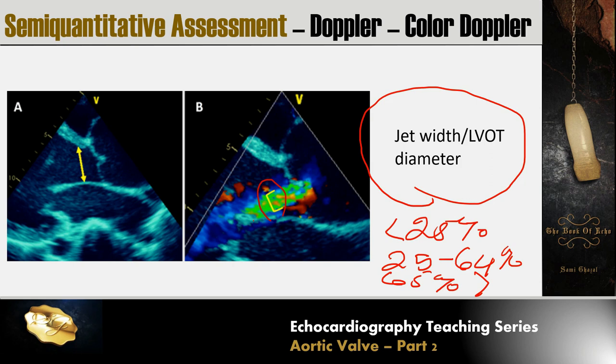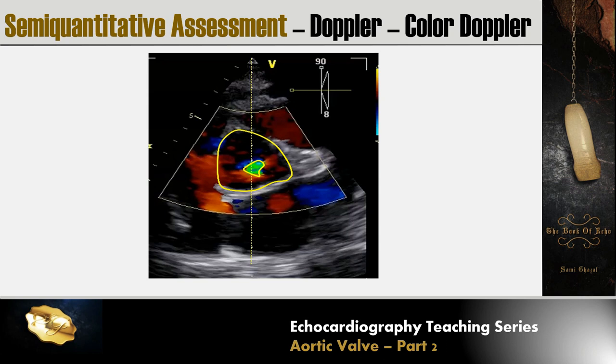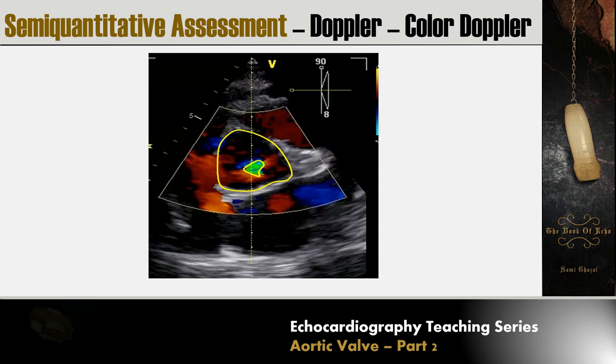We can also use the jet area ratio, which has different reference values for mild, moderate, and severe aortic regurgitation as listed in the reference value table. Biplane guidance is needed for this measurement.